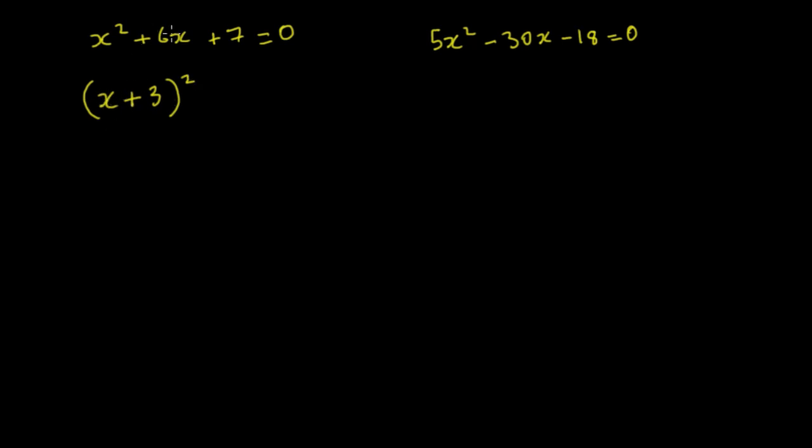But that's going to give us x squared plus 6x, but it's also going to give us an extra value of 9, so we're going to have to take the 9 away, plus 7 equals 0.